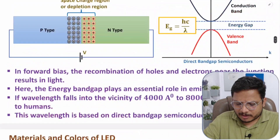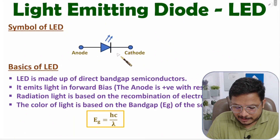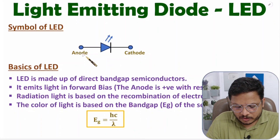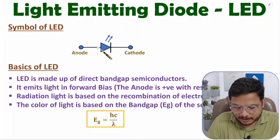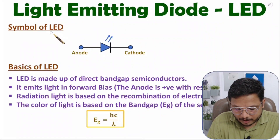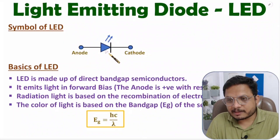Let us see first how the basic symbol is there with LED. The symbol of LED is similar to a normal PN junction diode symbol in which you just need to add two outer arrows. These two arrows indicate this diode can radiate light, meaning this is a light emitting diode. Here this is the anode terminal, this is the cathode terminal.